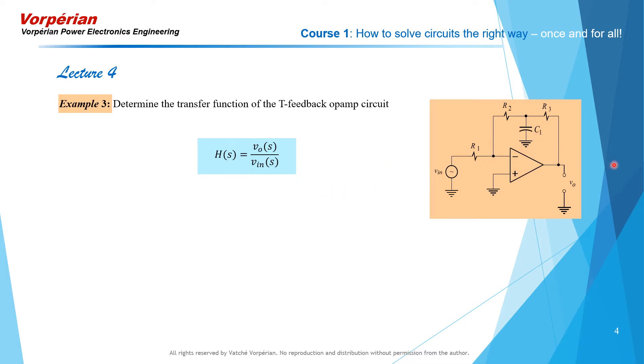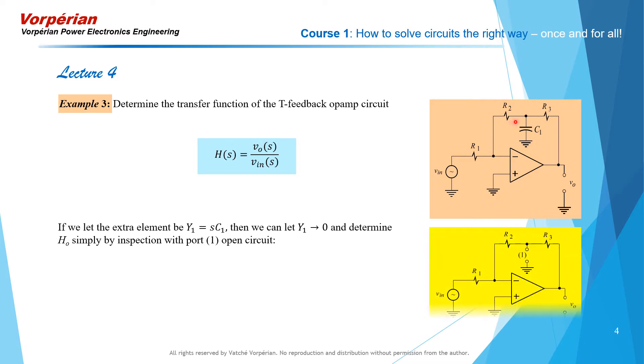The transfer function we want is output over input, as usual, and we are going to apply the extra element theorem. Clearly the element that we would like to designate as the extra element is the capacitor, and we'll take it out as an open circuit at first, which also means that you're looking at the circuit at very low frequencies or DC, so what you are determining in this calculation here is the low-frequency asymptote of the transfer function.